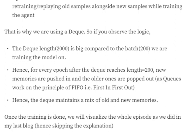Experience replay is implemented using a deque. You set a large length like 2000, and if the batch size is 200, once the deque length reaches 2000, new memories are pushed in and older memories are pushed out. Queues are based on the FIFO principle — first in, first out. Random samples are taken from this 2000-sample deque, so the batch always consists of both old and new memories. Once a new training sample is generated it is pushed in, the older one is popped out, and the deque maintains a mix of old and new memories together.